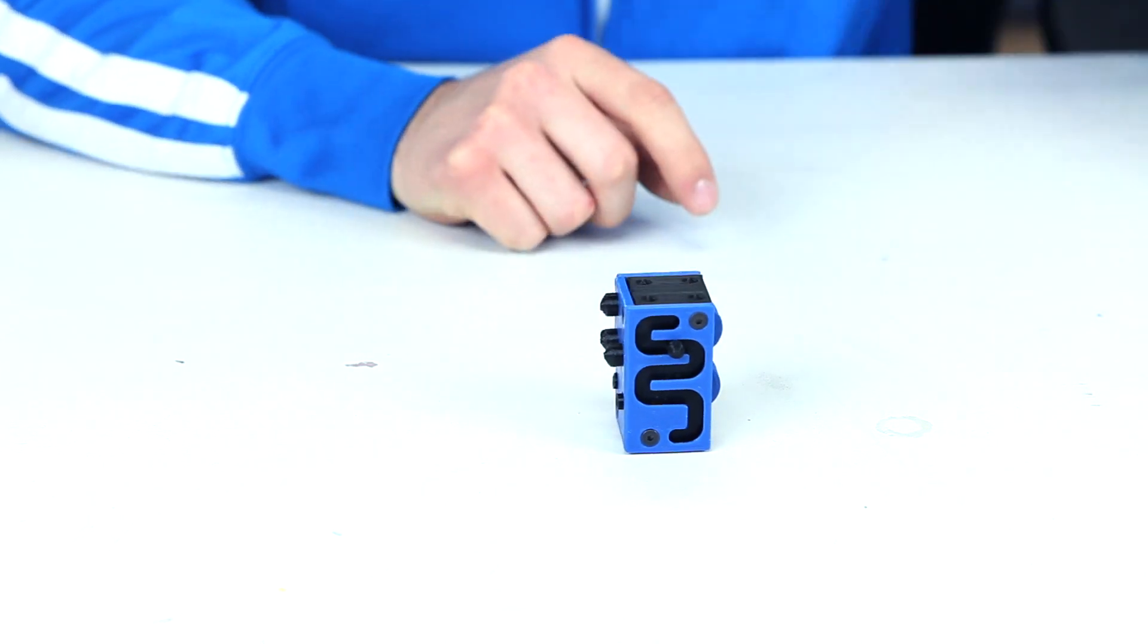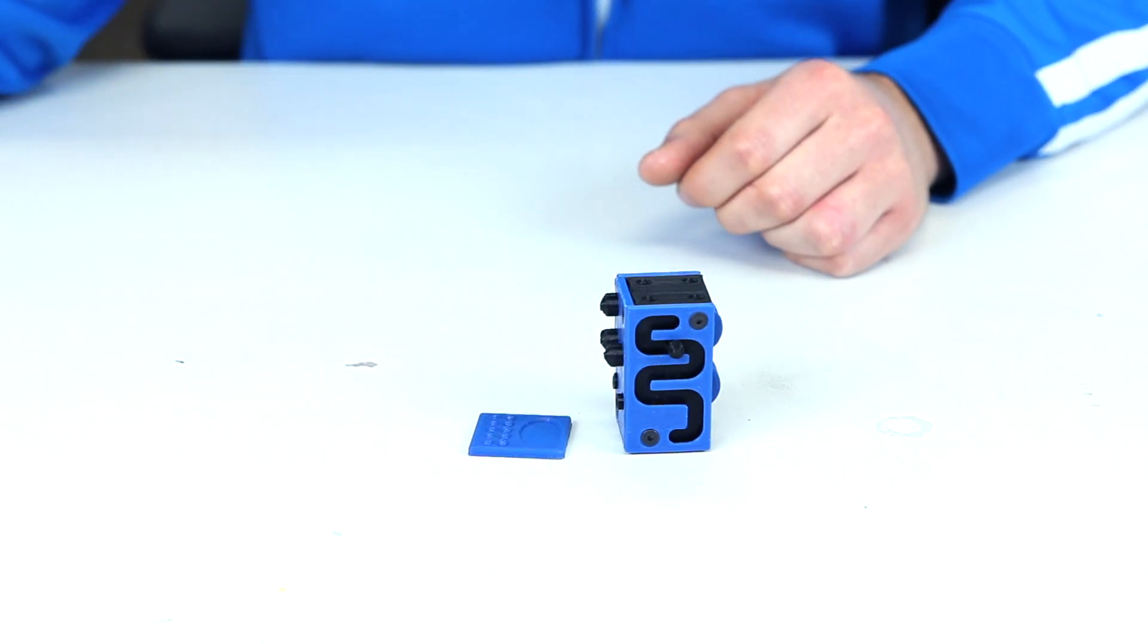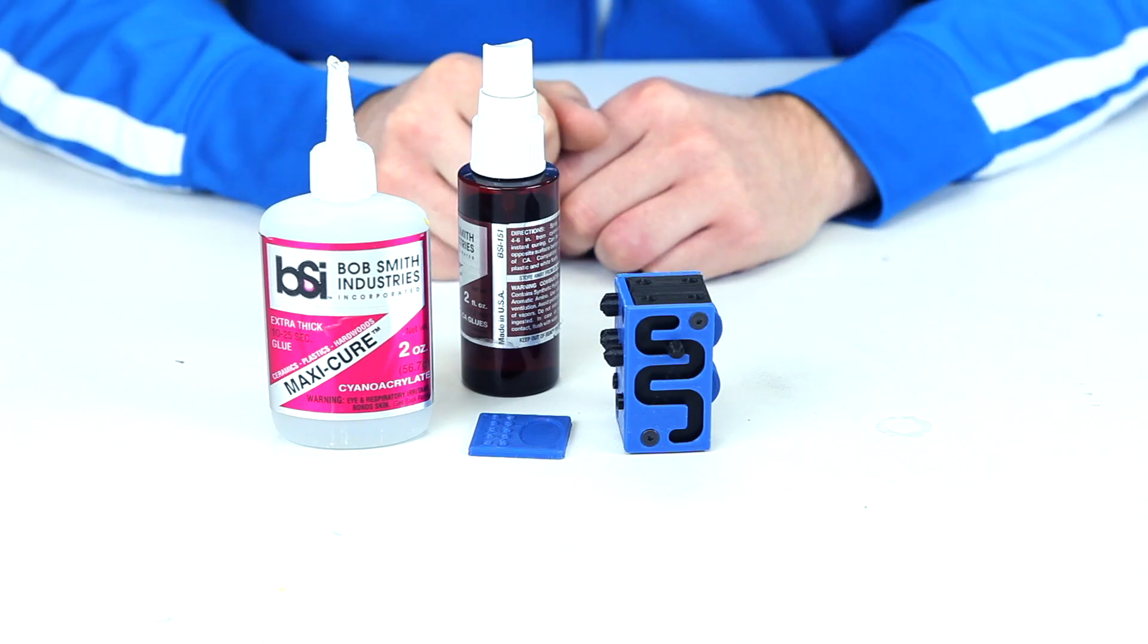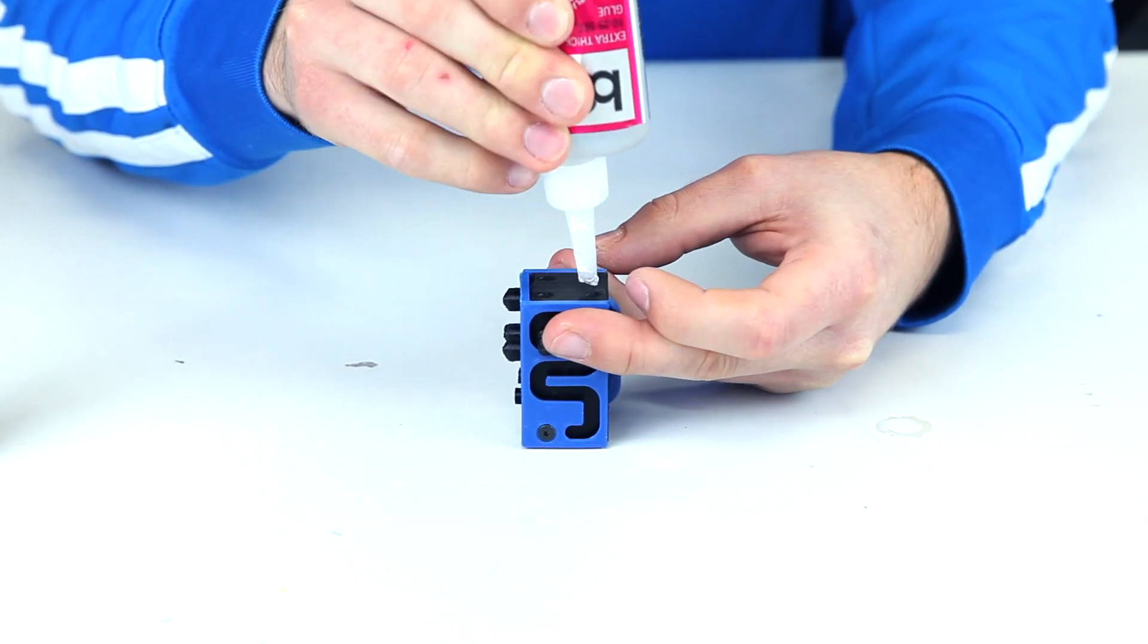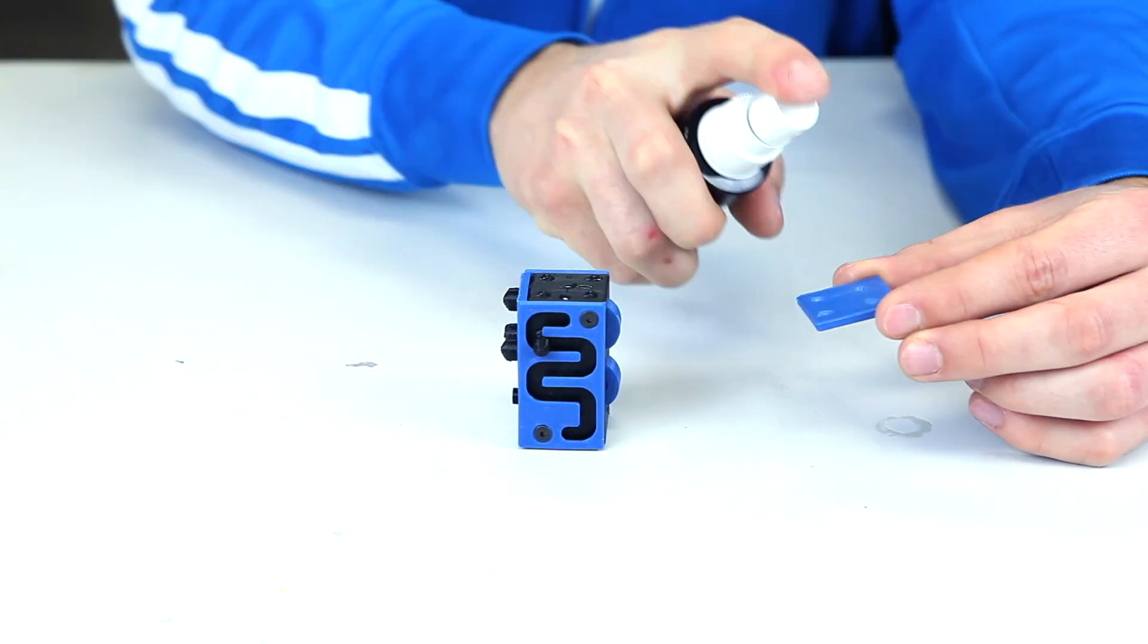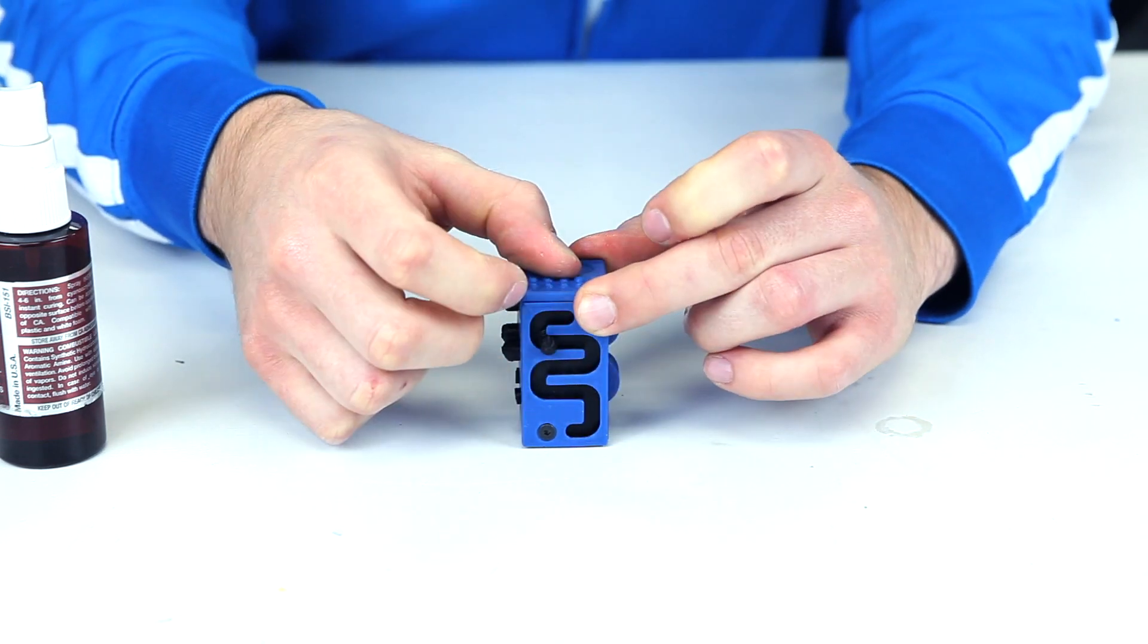For the top with the touch, you just need the touch panel, some cyanoacrylate glue, and accelerant. Put a drop of glue on each of the corners on the top, a little spray on the piece, and press it all together. There you go.